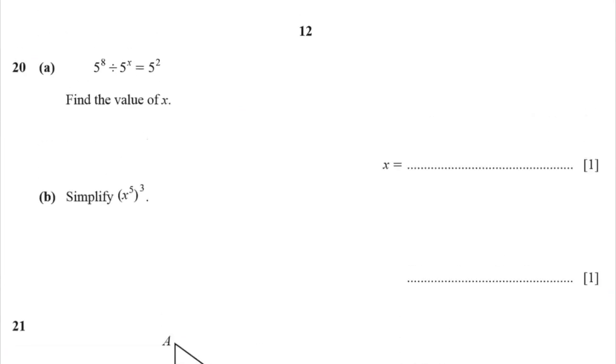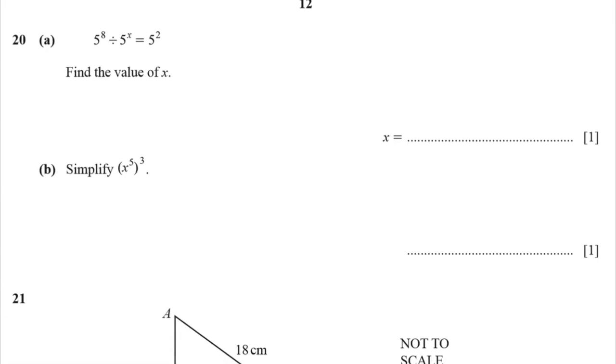Question 20. We've got some powers here. Find the value of x. When you divide indices and bases are the same, you subtract the powers. So this is going to be 5 to the 8 minus x equals 5 to the 2. Well, 5 to the something equals 5 to the something. Those two somethings must be the same. So 8 minus x must equal 2. 8 minus what is 2? Well, x is 6. 8 minus 6 is 2.